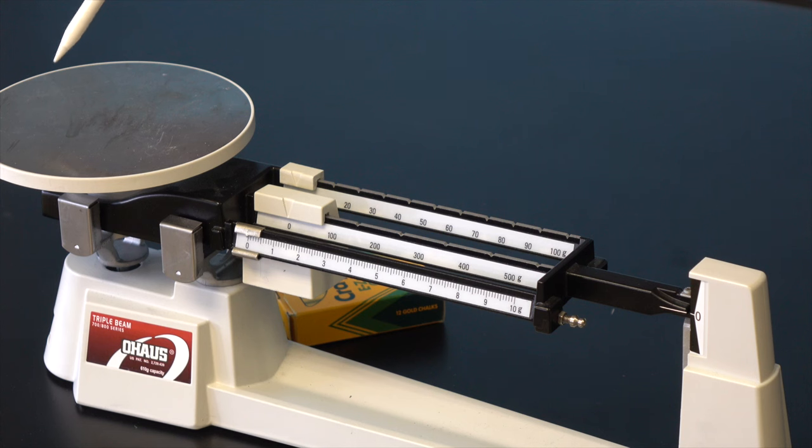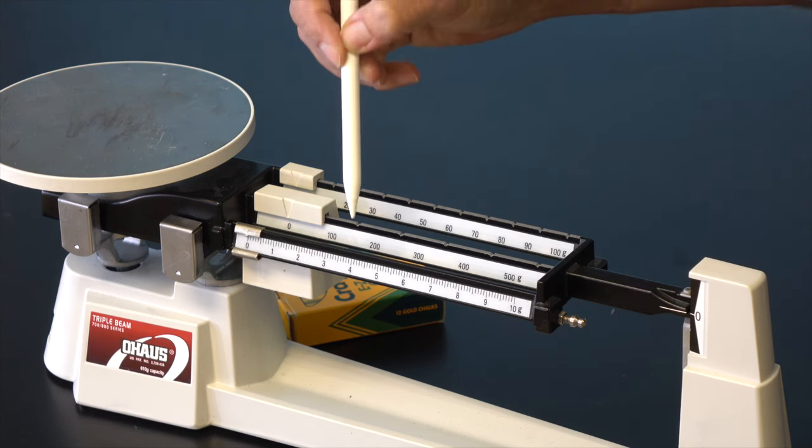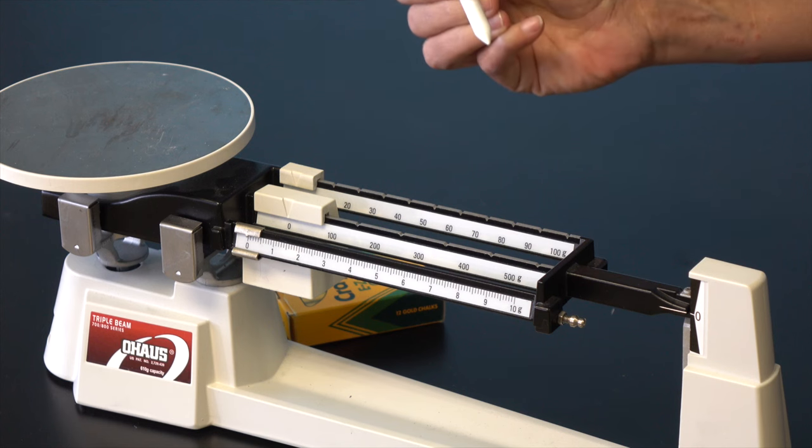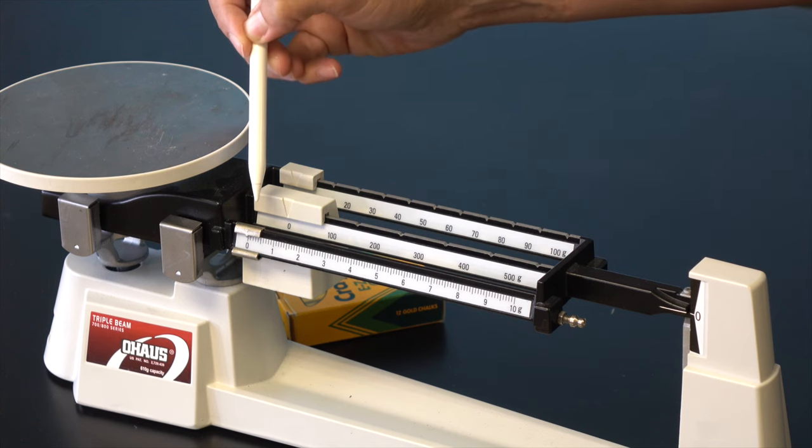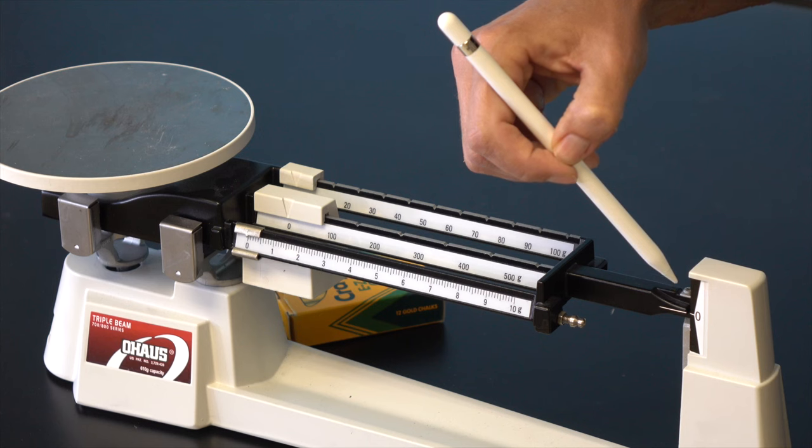This is the pan under which the object is placed. These are the beams. This is a triple beam balance because there are three of these beams. These are the riders. And this is the pointer.